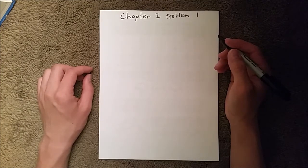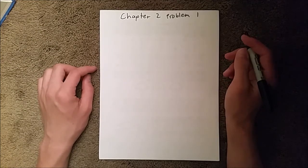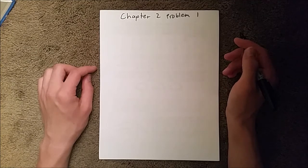Chapter 2 is all about motion along a straight line. And Problem 1 is about average velocity and average speed.